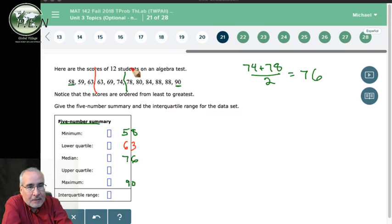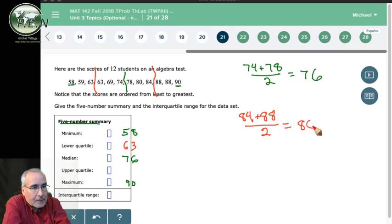On the top half, again, we've got 6 up here, 6 pieces of data, so it's halfway. So there's 3 here, 3 there. It's going to be halfway between 84 and 88. And again, you can calculate that by doing 84 plus 88 divided by 2. What you'll find is halfway between 84 and 88 is 86. So that's going to be the upper quartile.